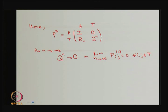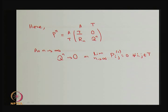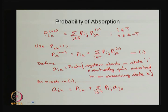For the n-step transition probability matrix, A-to-A remains the identity matrix, T-to-T is Q^n, and as n → ∞, Q^n → 0 since the system will not remain in transient states indefinitely. Our main interests here are the probability of absorption — the probability that starting from a transient state the system gets absorbed into a given absorbing state — and the mean time before absorption.